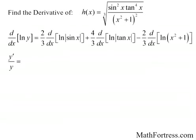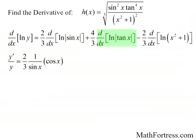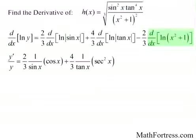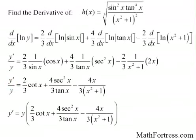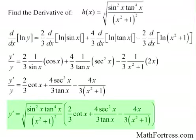Now we take derivatives of both sides. The derivative of the left-hand side equals y prime over y. The derivative of the natural log of the absolute value of sine of x equals 1 over sine of x times cosine of x. The derivative of the natural log of the absolute value of tangent of x equals 1 over tangent of x times secant squared of x. The derivative of the natural log of x squared plus 1 equals 1 over x squared plus 1 times 2x. Solving for y prime, we multiply both sides by y and substitute the original function. The final derivative equals the cube root of sine of x squared times tangent of x to the 4th over the quantity x squared plus 1 squared, times the quantity 2 thirds cotangent of x plus 4 secant squared of x over 3 tangent of x minus 4x over 3 times the quantity x squared plus 1.